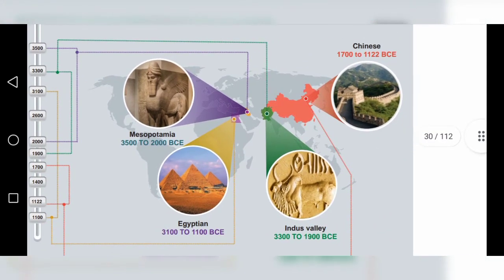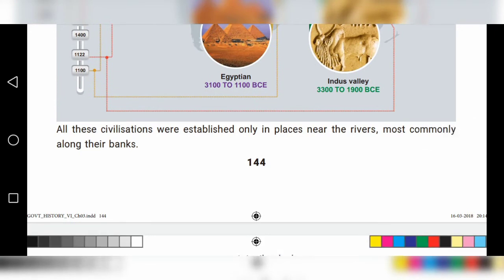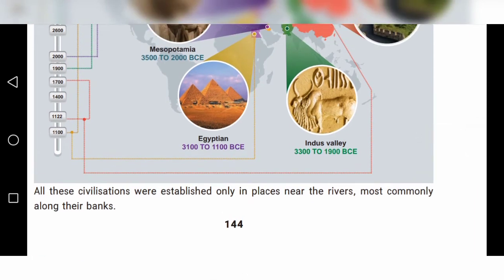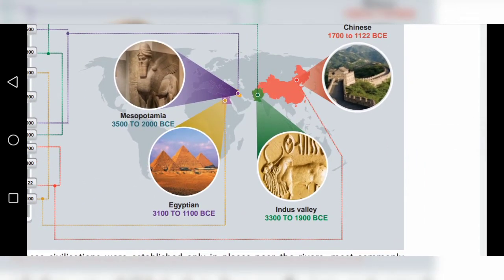There are four types of civilization we have to study: Indus Valley Civilization, Chinese Civilization, Egyptian Civilization, and Mesopotamian Civilization. All these civilizations were established only in places near the rivers, most commonly along the banks. Why did people settle near rivers or water banks?